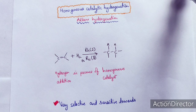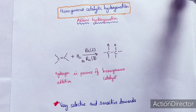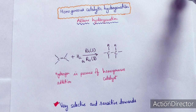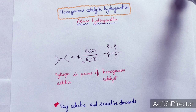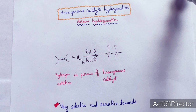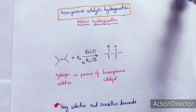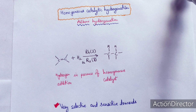Dear students, welcome again to the series on homogeneous catalytic reactions. We have already discussed homogeneous catalysts, the difference between homogeneous and heterogeneous catalysts, and the Wilkinson catalytic hydrogenation reaction without mechanism. In this lecture series, I will discuss catalytic processes in detail. This lecture will cover alkene hydrogenation — how alkenes are hydrogenated in the presence of homogeneous catalysts.